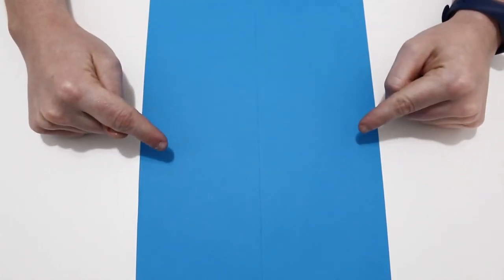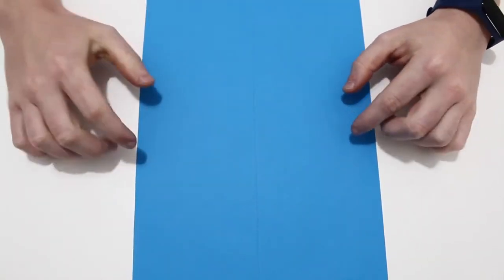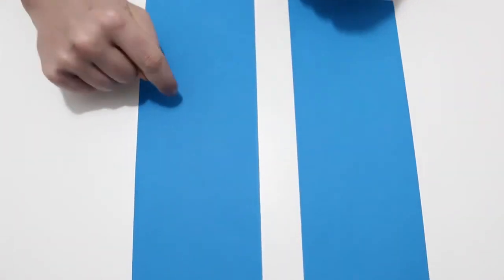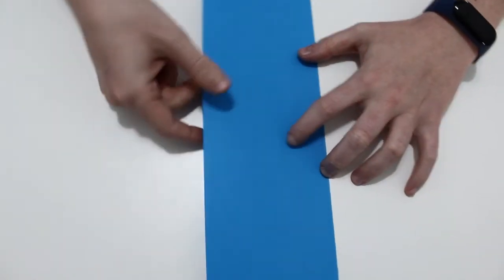Vamos a por la segunda flor que es la lavanda. Para eso vamos a utilizar un folio, vamos a cortarlo a lo largo de esta forma. Vamos a utilizar solo un trocito. Vamos a doblarlo por la mitad.